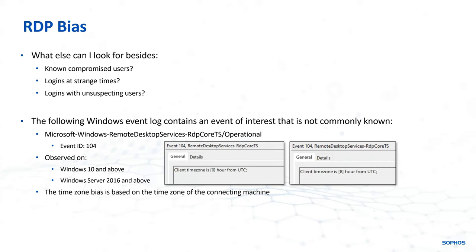Now most of us are quite familiar with how to find and look for suspicious RDP lateral movement, whether that's looking based on known compromised users. So maybe you have an alert from antivirus or EDR that's associated with a user and you're currently pivoting from that. But maybe you're looking at logins occurring at strange times or logins with unsuspecting users — so why is James connecting to a domain controller at 3am when he typically only accesses our Sage servers?